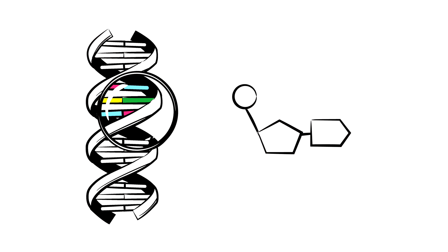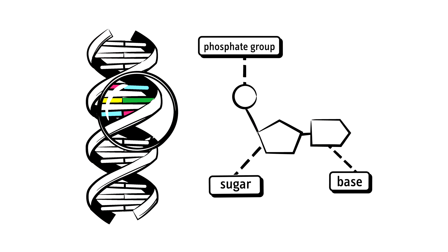They consist of three parts: a phosphate group, a sugar, and one of four bases: guanine, adenine, cytosine, and thymine.